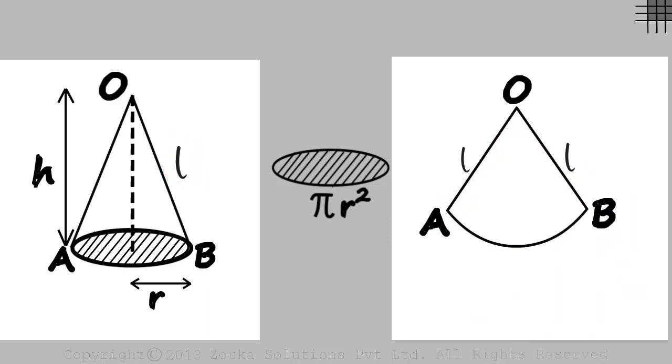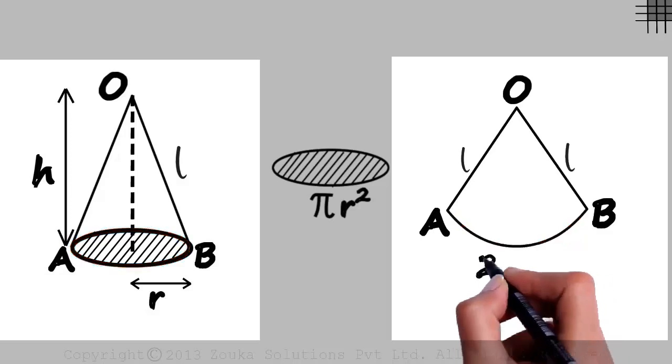Here's another interesting question. What will be the length of arc AB? This is an arc as we know that a sector is part of the circle. This arc is actually the circumference of the circular base. So the length of this arc will be 2 pi r.